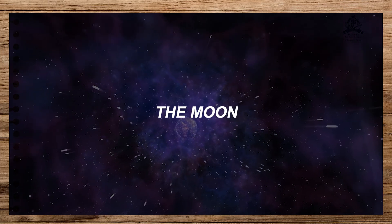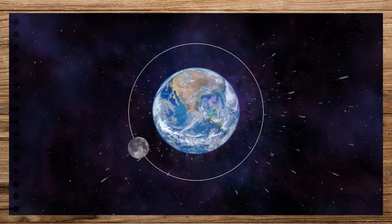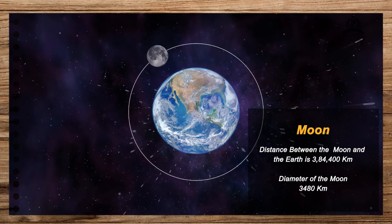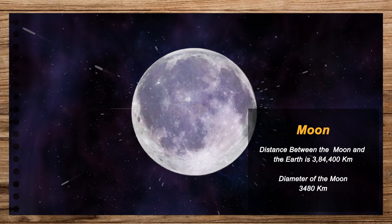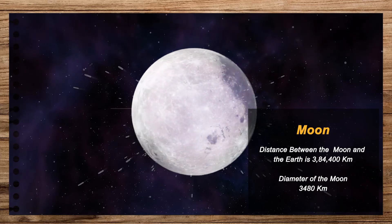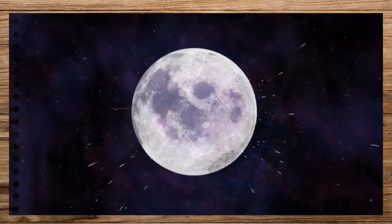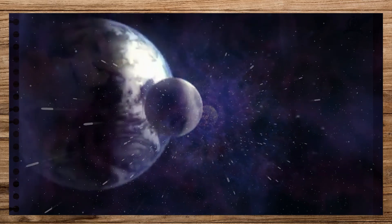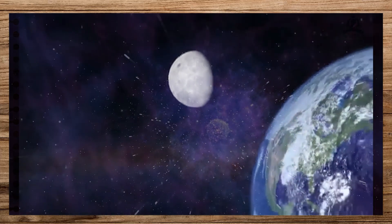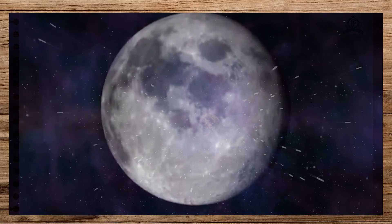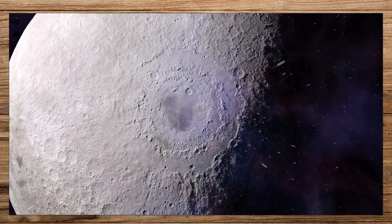The moon is the heavenly body which is closest to the Earth. The average distance of the moon from the Earth is about 384,400 km. Its diameter is about 3,480 km. The moon appears larger and brighter than any other celestial body in the night sky. The reflected light of the Sun from the moon reaches the Earth's surface in about 1.3 seconds. No life can exist on the moon due to the absence of atmosphere and moisture. There is no sound, as there is no air to carry the sound waves.